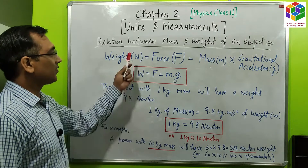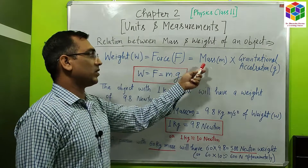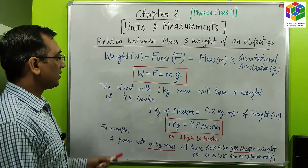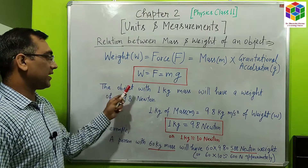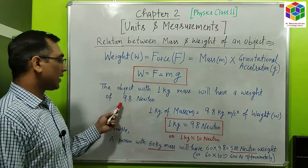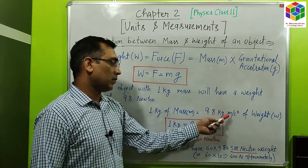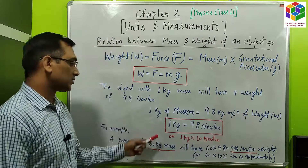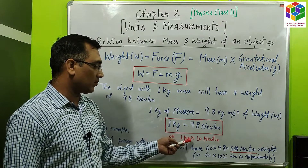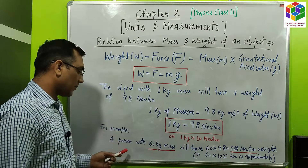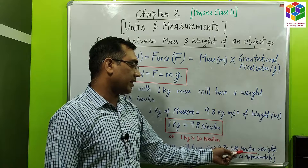Now let us see the relation between mass and weight of an object. Weight W is equal to force, which is equal to mass into gravitational acceleration g. The formula is W = F = m × g. An object with 1 kilogram mass will have a weight of 9.8 Newtons. So 1 kilogram of mass corresponds to 9.8 Newton of weight. For example, a person with 60 kilogram mass will have 60 × 9.8 = 588 Newtons of weight.